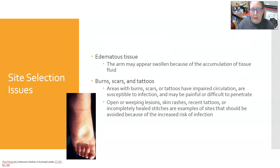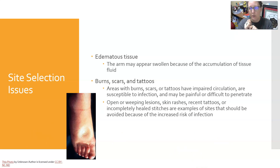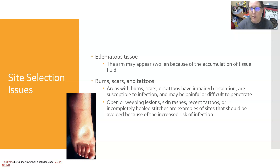Edema is another concern — the arm may appear swollen because of the accumulation of tissue fluid. Sometimes it can be so bad that when you tie the tourniquet around the arm, the arm starts weeping tissue fluid and the tourniquet gets soaked. When you first enter the vein, some tissue fluid may cause a sample to clot, and if using a butterfly needle, it can actually pull tissue fluid into the tubing. It's not a bad idea to draw the discard tube first and then collect your regular tubes.